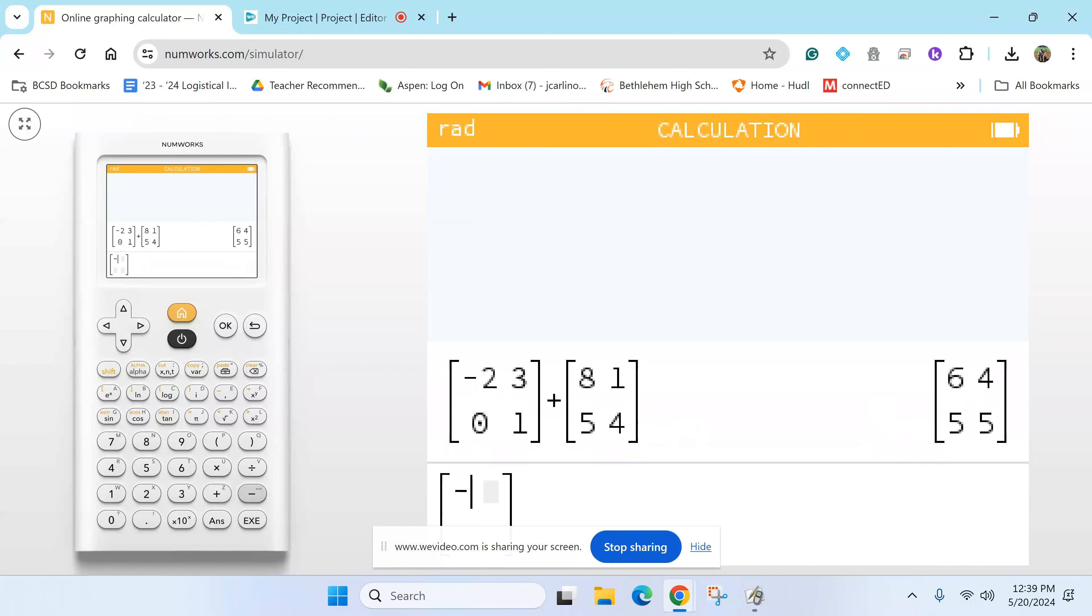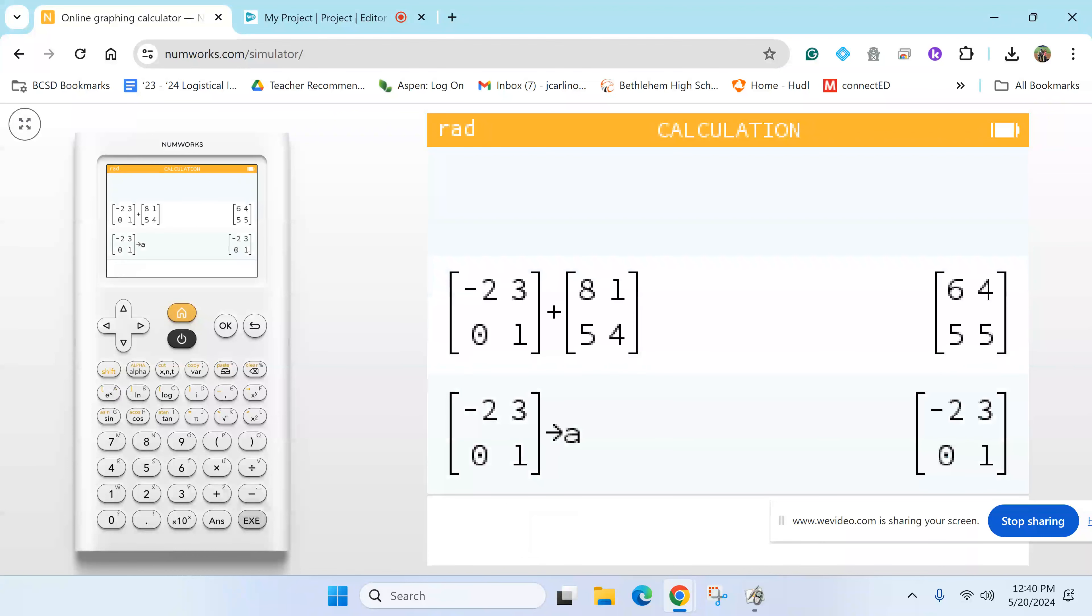You type in the first matrix - negative two, three, one, and zero. Now watch what I'm about to do here. I take that matrix and I can call it matrix A, because that's what it is in the problem. Remember our good old store key from the regents exam? You can store it - shift XY, store that in for alpha A. Anytime you need that matrix now you don't need to retype it or copy, you can just literally press A and it'll do it for you.